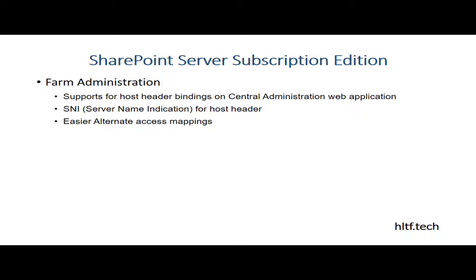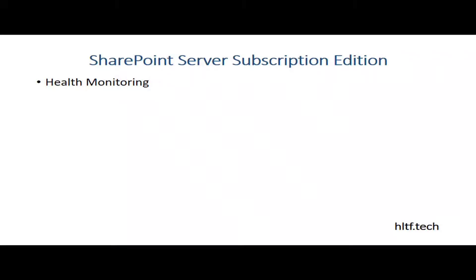Another farm administration improvement is easier Alternate Access Mapping. Alternate Access Mapping is very important when dealing with different zones — extranet, internet, and intranet zones — and you want to provide access to your web application across all of them. I will be making a familiarization video about Alternate Access Mapping in an upcoming video, so stay tuned to the channel.